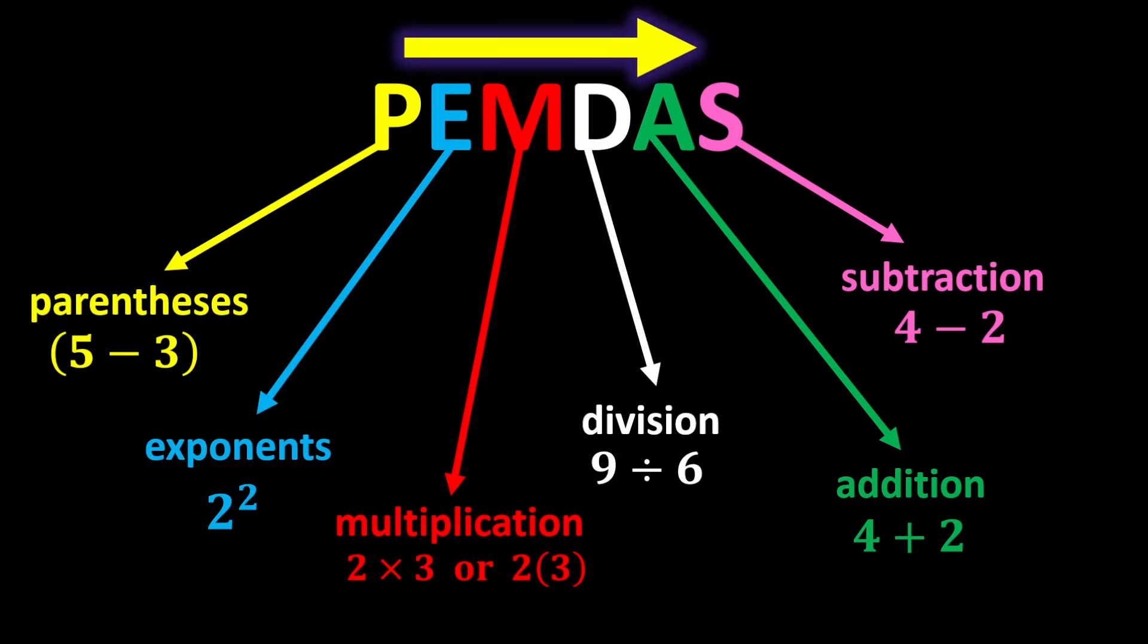Multiplication and division have equal priority, so whenever both appear in an expression, move from left to right and perform whichever you reach first. This rule also applies to addition and subtraction.